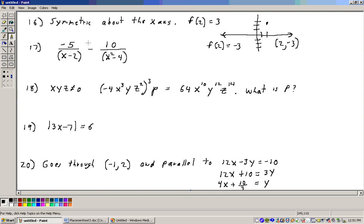This problem, we need to simplify this. First thing I would recommend doing is to factor any denominator. The top, we have minus 5 over x minus 2. That's the first fraction. And the second one, I'll rewrite this as being minus 10 over, this is a difference of two squares. We can write that as being x plus 2, x minus 2.